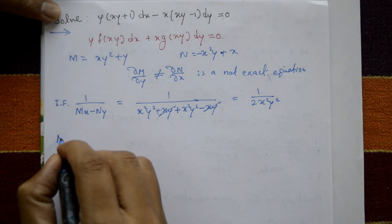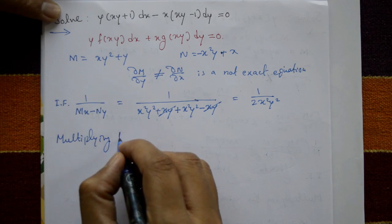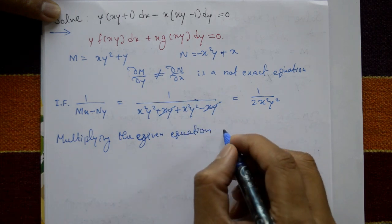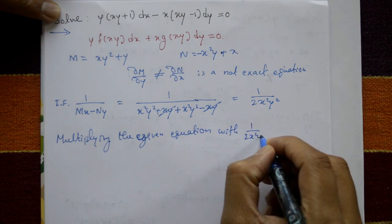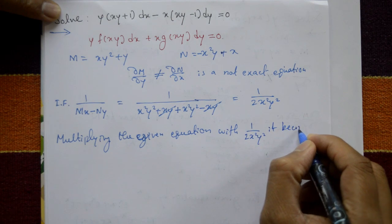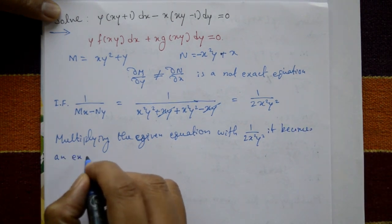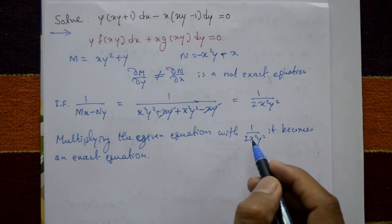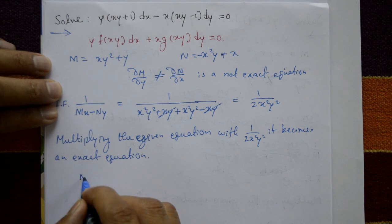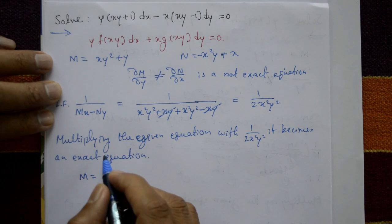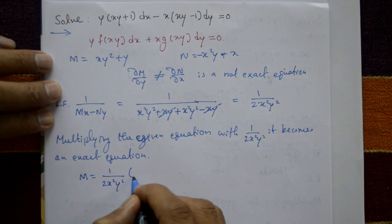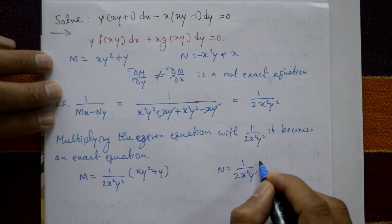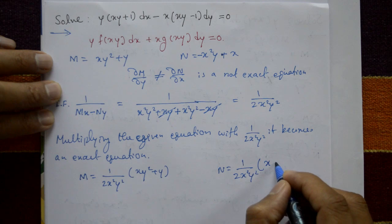Multiply this integrating factor by the given equation. Multiplying the given equation with 1 upon 2x²y², it becomes an exact equation. Multiply 1 upon 2x²y² into M, which is x·y² plus y, and N is — writing the positive term first — x minus x²y.